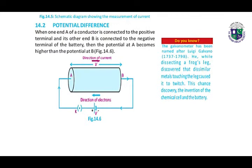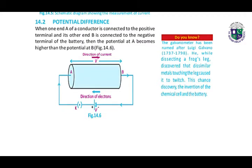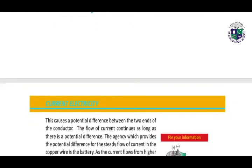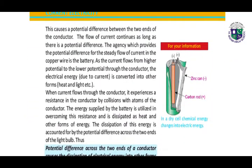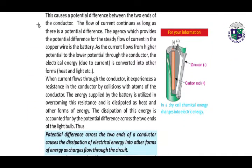What is potential difference? When end A of a conductor is connected to the positive terminal and end B is connected to the negative terminal of the battery, this causes a potential difference between the two ends of the conductor. The flow of current continues as long as there is a potential difference.